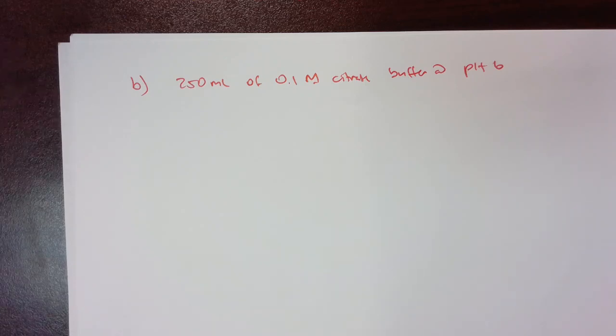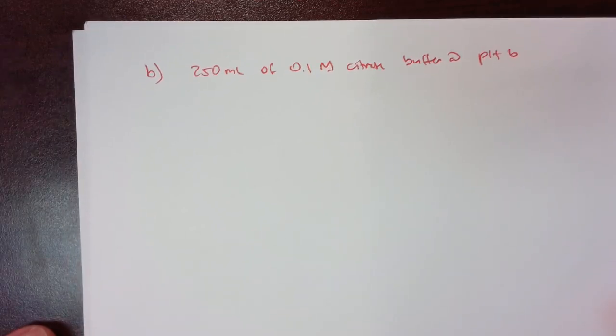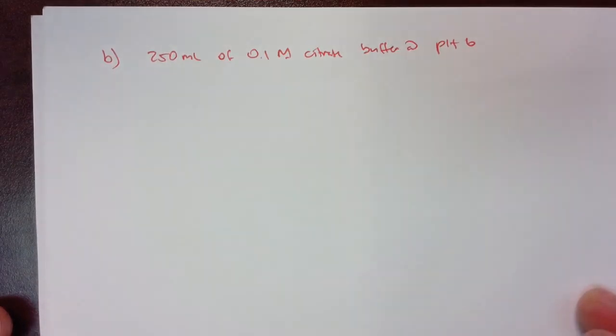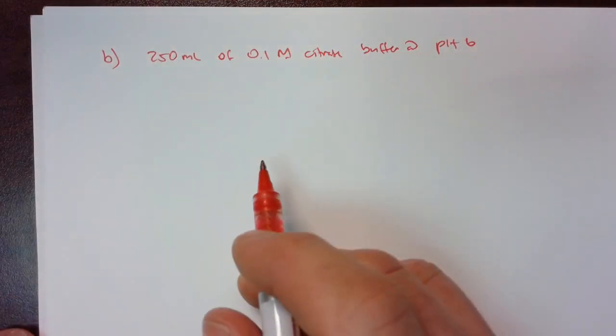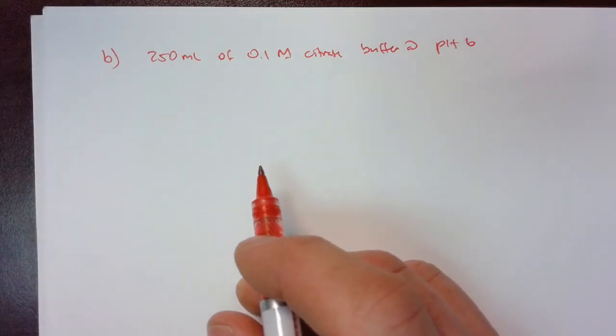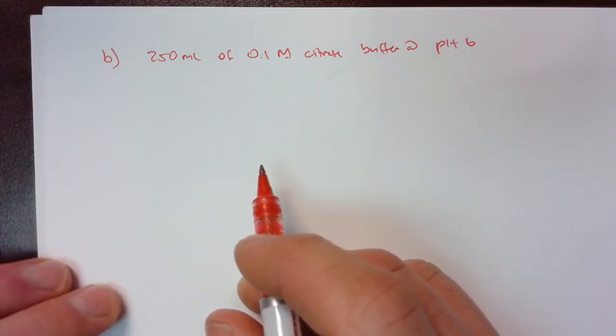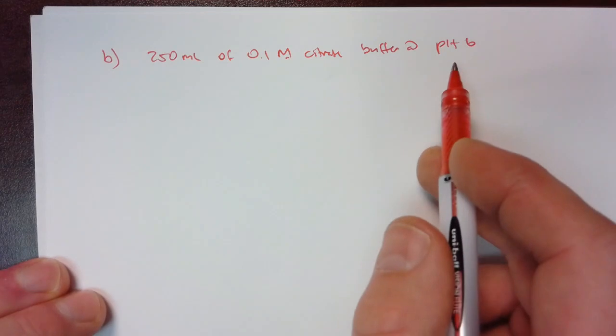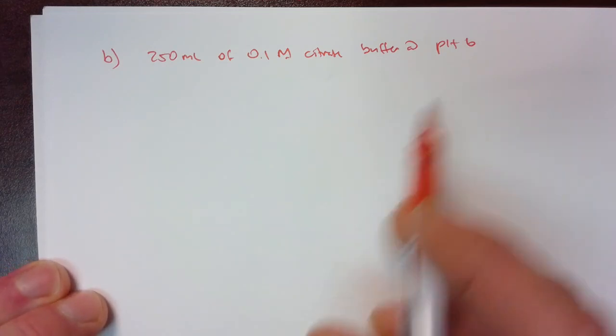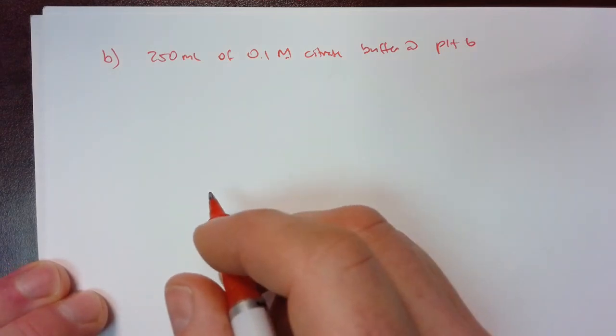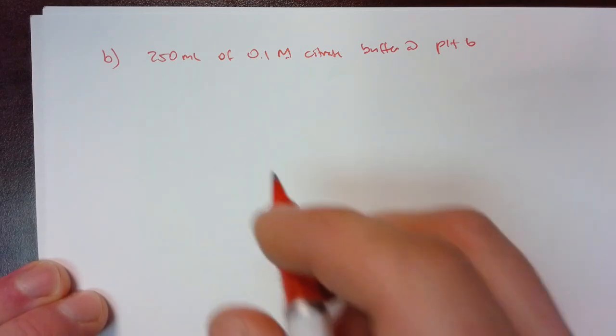Citrate is also a triprotic acid. And so it has three different pKa values. The pKa value that we're going to use is going to be the one closest to pH 6. And I'll show you what the forms of that are going to be here in just a second.